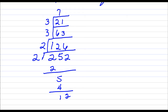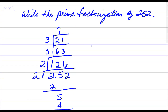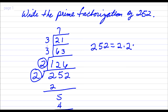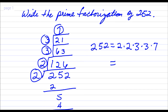So the prime factorization of 252 is 2 times 2 times 3 times 3 times 7. Or if you choose, you can write 252 as 2 raised to the second power, because there are two factors of 2, times 3 raised to the second power, because there are two factors of 3, times 7.